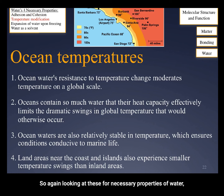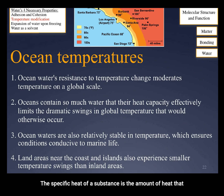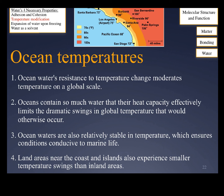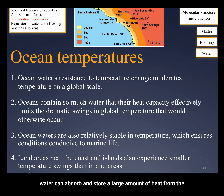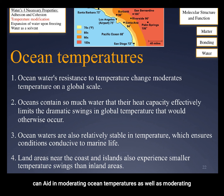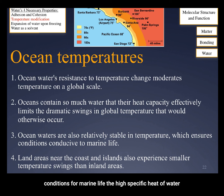Looking at the four necessary properties of water, we've covered adhesion and cohesion — now we'll look at temperature modification. The specific heat of a substance is the amount of heat that must be absorbed or lost for one gram of that substance to change by one degree Celsius. Water has a very high specific heat, meaning a body of water can absorb and store a large amount of heat from the sun while only rising in temperature a few degrees. This aids in moderating ocean temperatures as well as air temperatures in coastal areas, creating favorable conditions for marine life. The high specific heat of water and the fact that water covers most of the Earth allows for temperature fluctuations on land that support biological life.